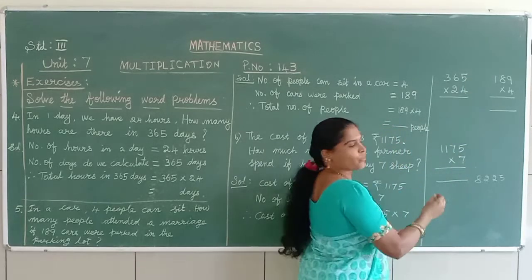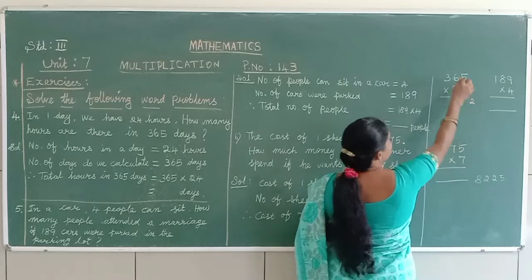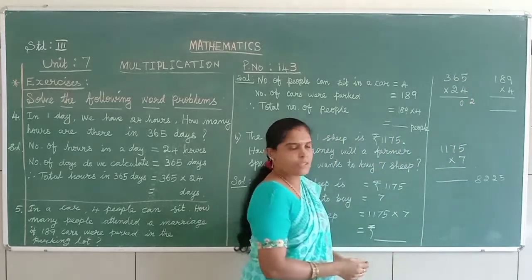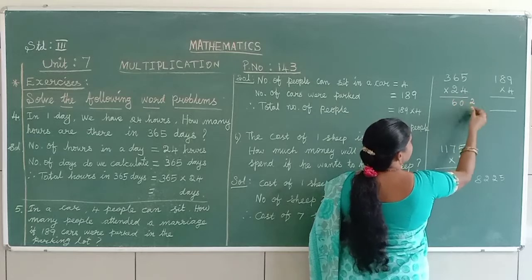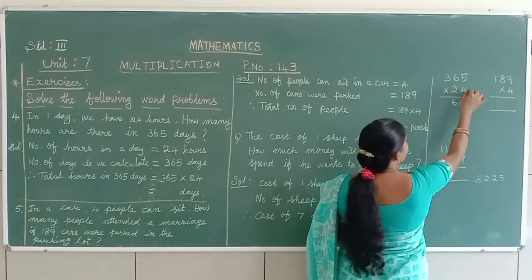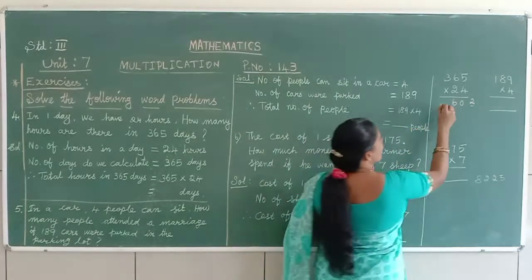4, 5's are 20. So, 0 is here. 2 in the side. 4, 6 are 24. 24 plus 2? 26. 6 in this case. Again, 2 in the side. 4, 3's are 12. 12 plus 2? 14.